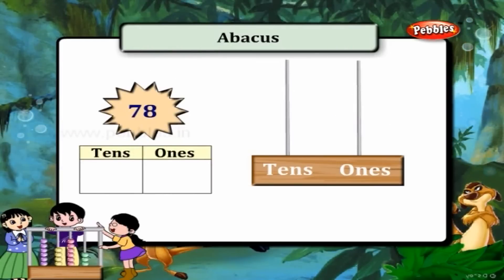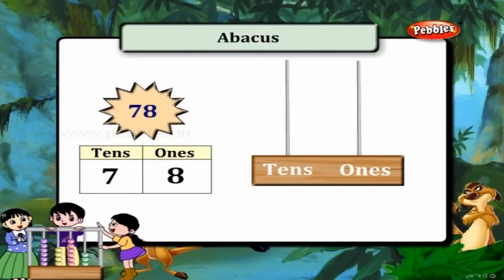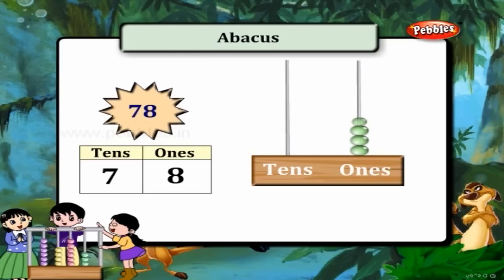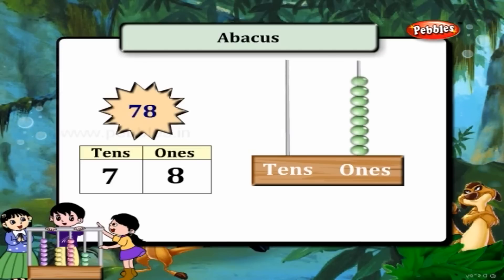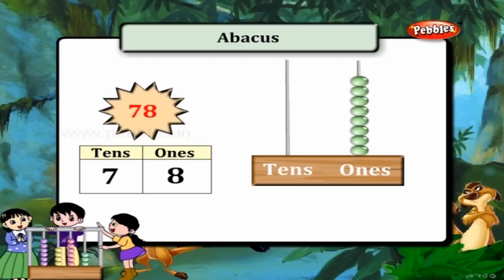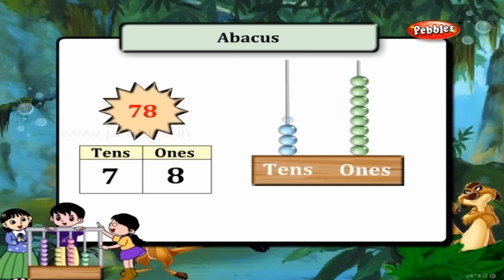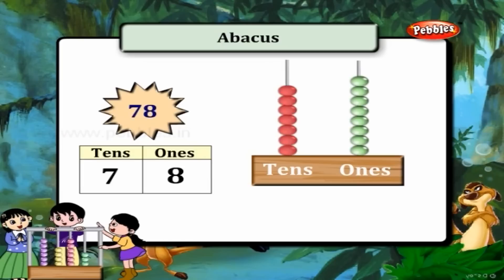78 is 8 ones and 7 tens. So draw 8 beads on the ones line and 7 beads on the tens line.